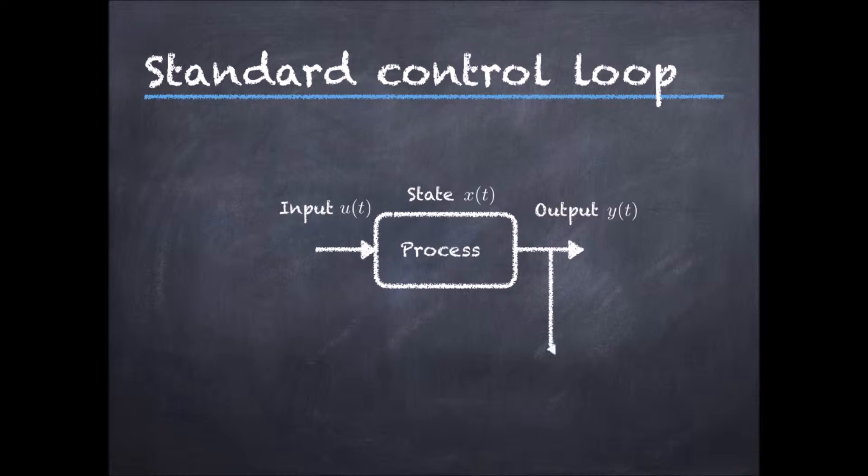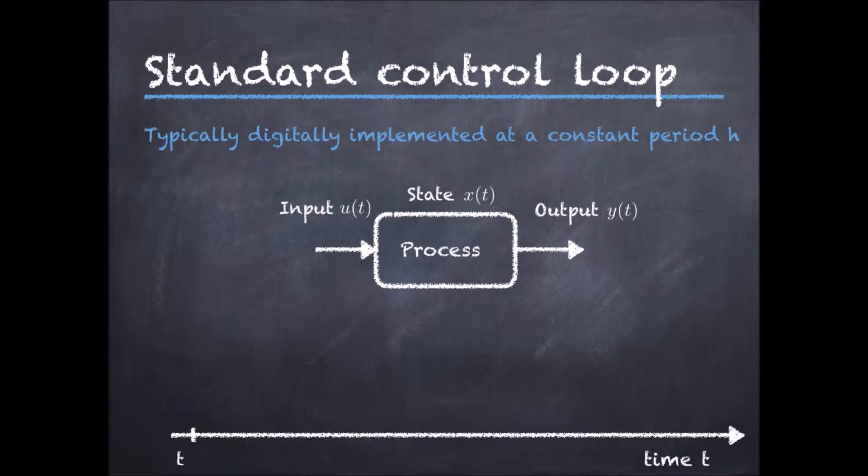The goal of the control law is then to decide, based on the output, what should be the input in order to achieve the desired behavior. Let us have a look at how this process is actually implemented over time. This typically happens periodically with, say, a sample input h.